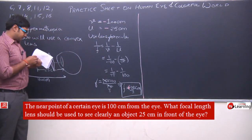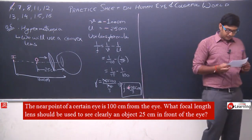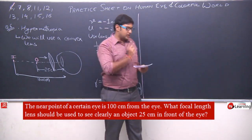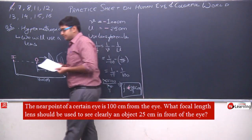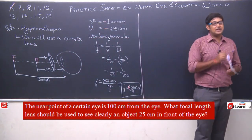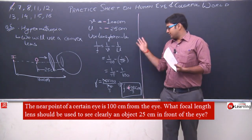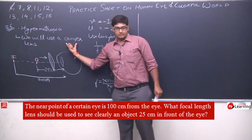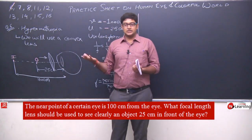Is question mein humne identify kiya ki hypermetropia hai. Kyunki normal eye ke liye far point infinity hai aur near point 25 centimeter hai. Agar kisi ka near point change ho raha hai, it means he is suffering from hypermetropia. Aur agar kisi ka far point change hota hai, it means he is suffering from myopia. This numerical question may carry around 3 marks in exam — please be careful. Calculation bahut simple hai. Diagram bhi sketch karna exam mein more marks dilayega.